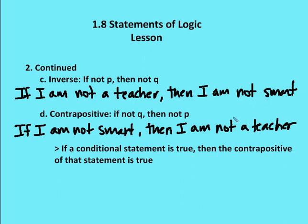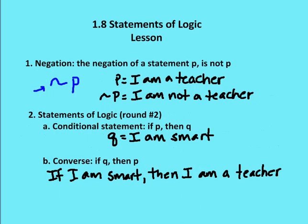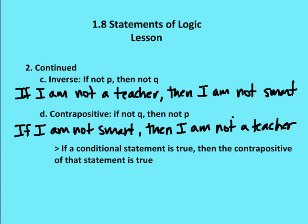It just so happens that if the original conditional statement is true — if it's true that if I am a teacher, then I am smart — then the contrapositive must also be true: if I am not smart, then I am not a teacher. If the conditional statement is always true, then the contrapositive of that statement will always be true.